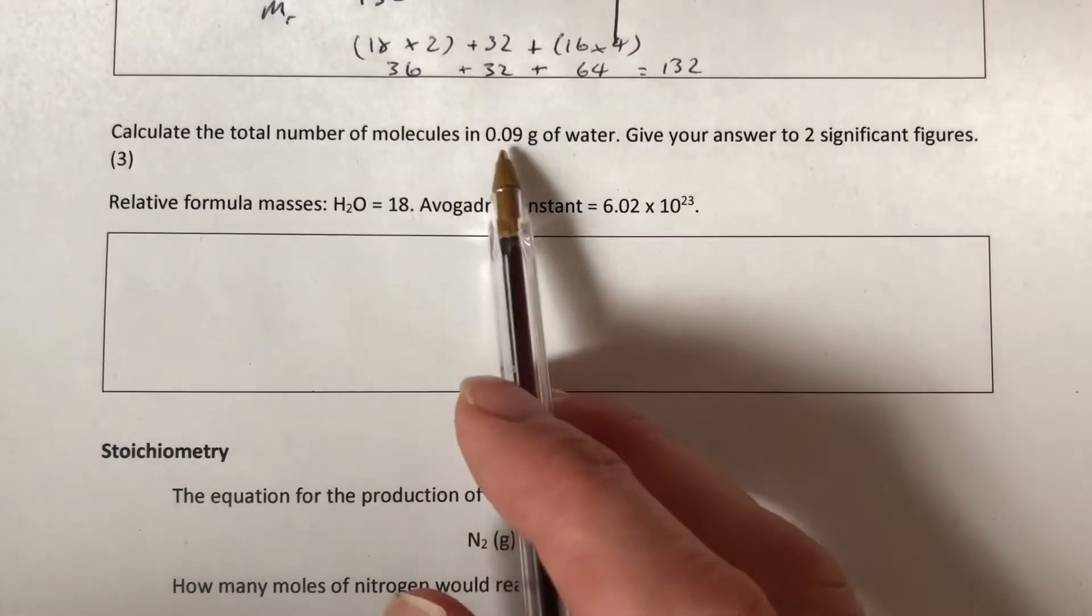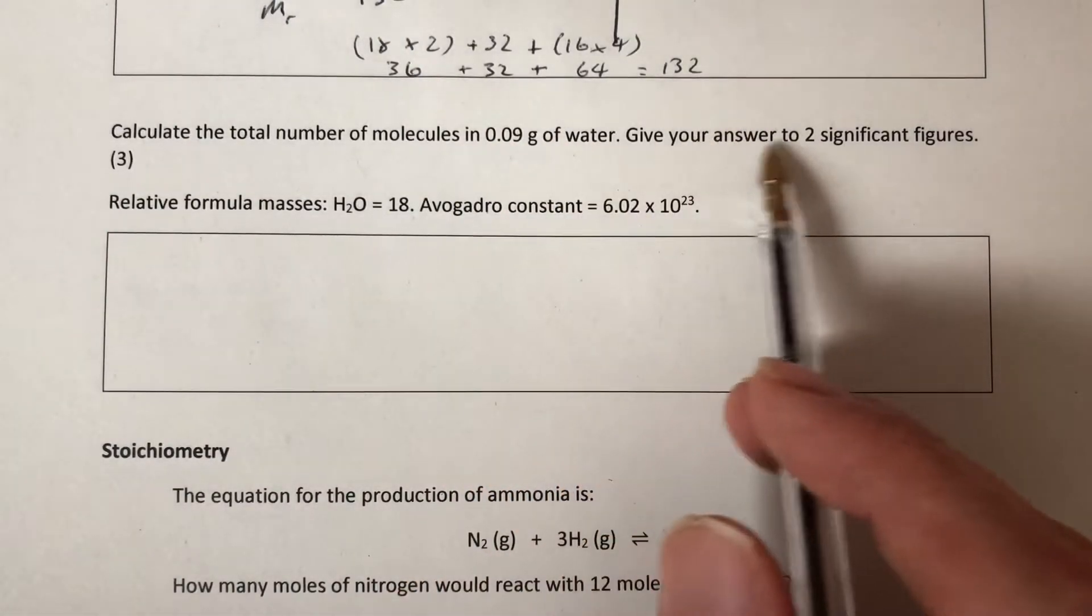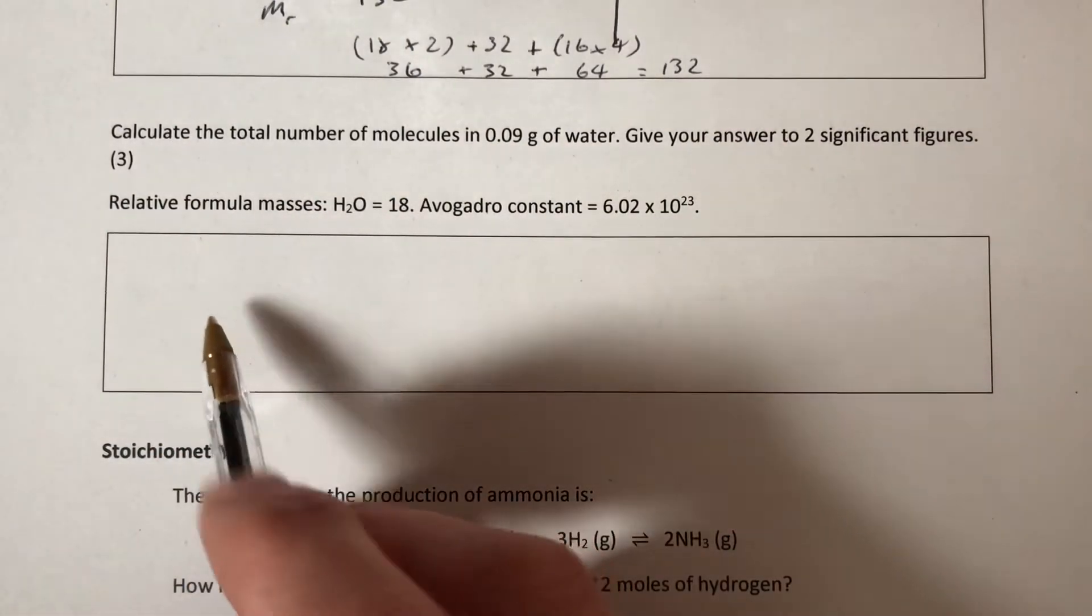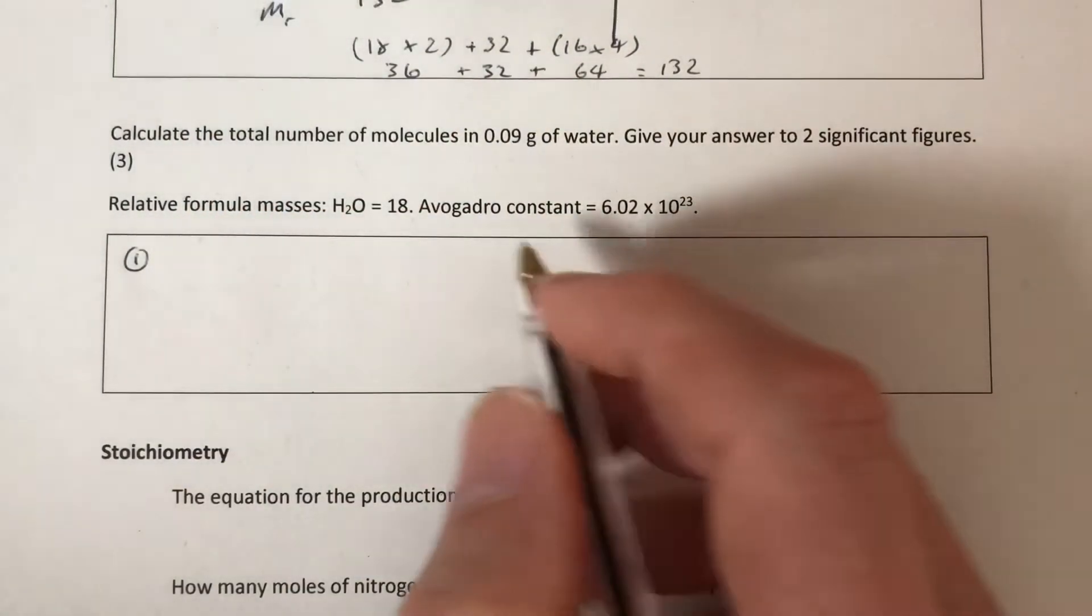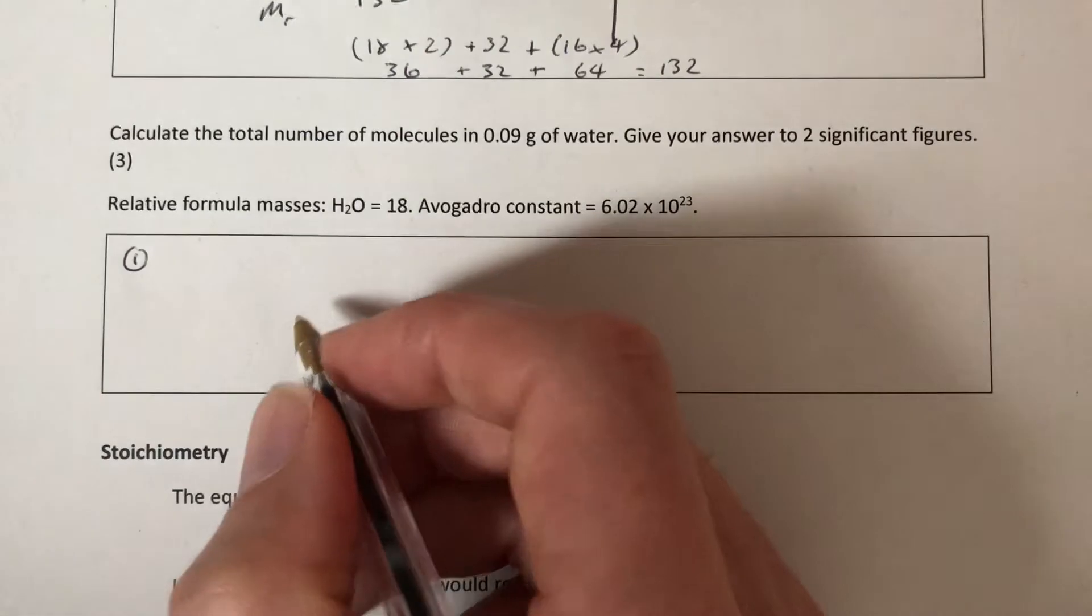Calculate the total number of molecules in 0.09 grams of water. Give your answer to two significant figures. This is a moles calculation involving the Avogadro constant. We've got two stages to this.